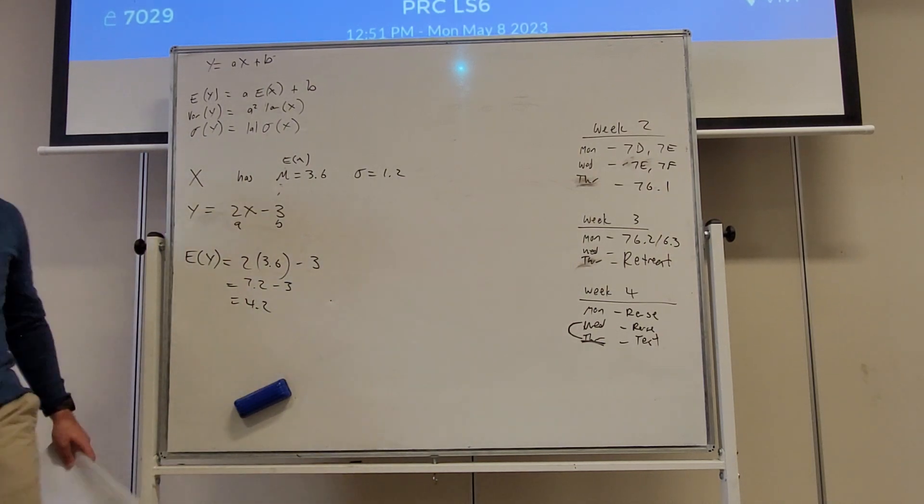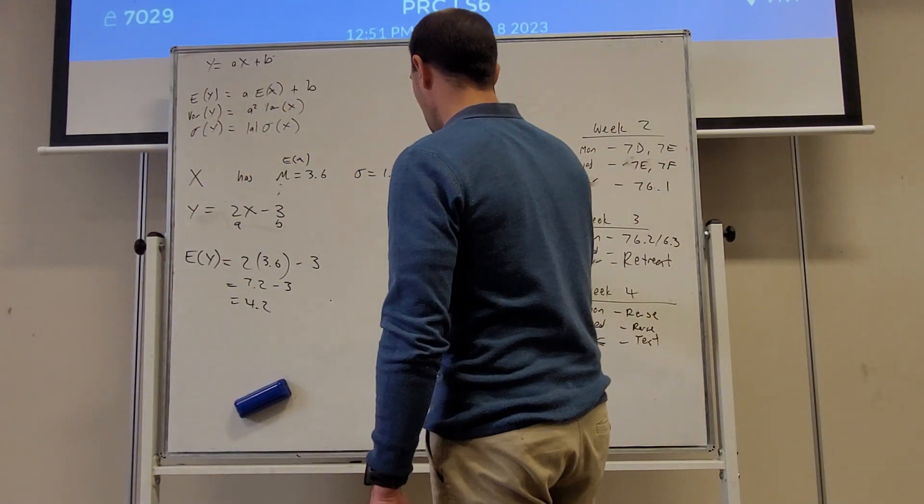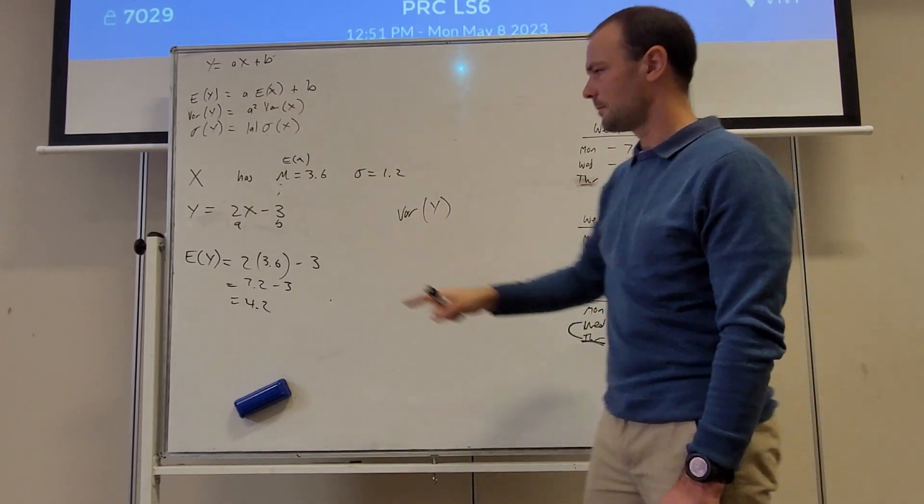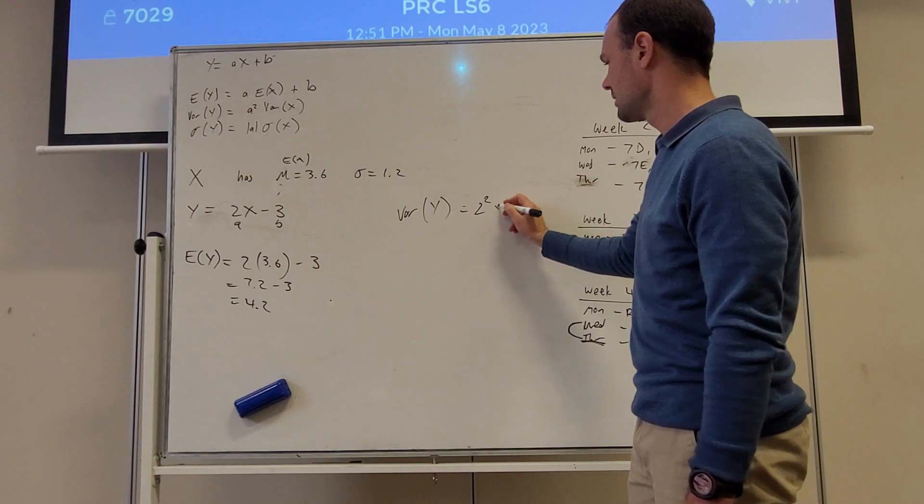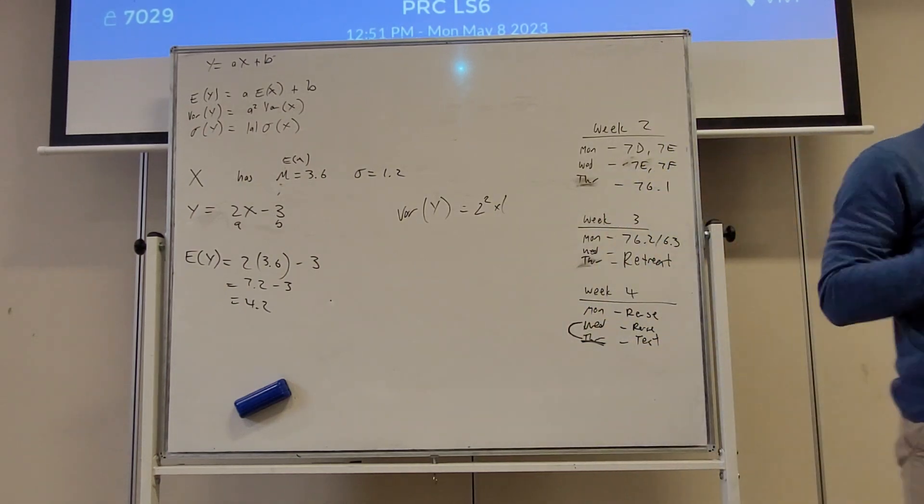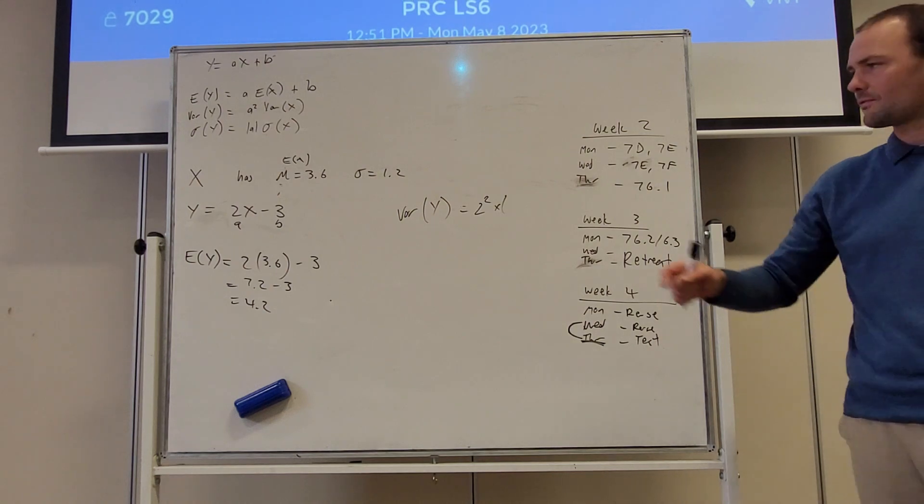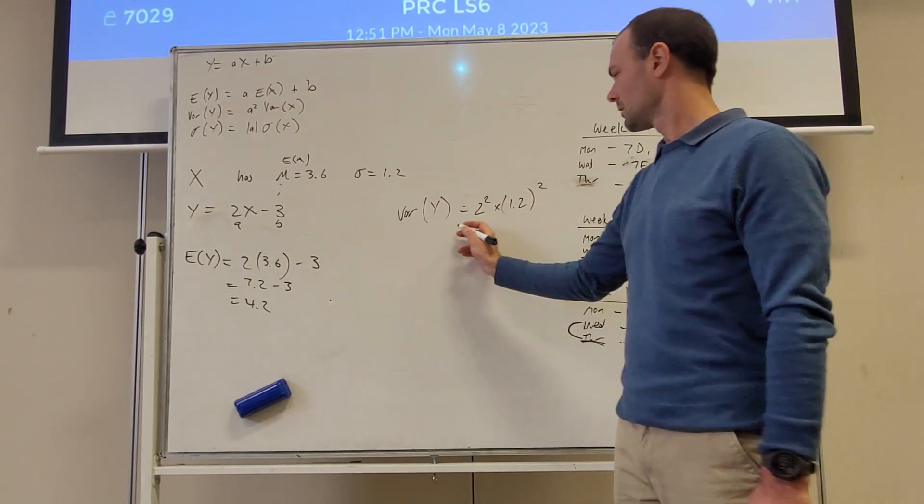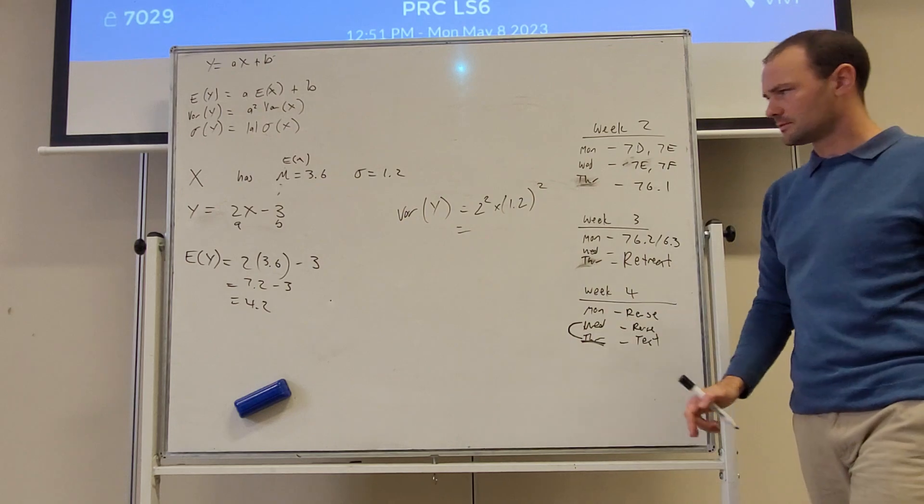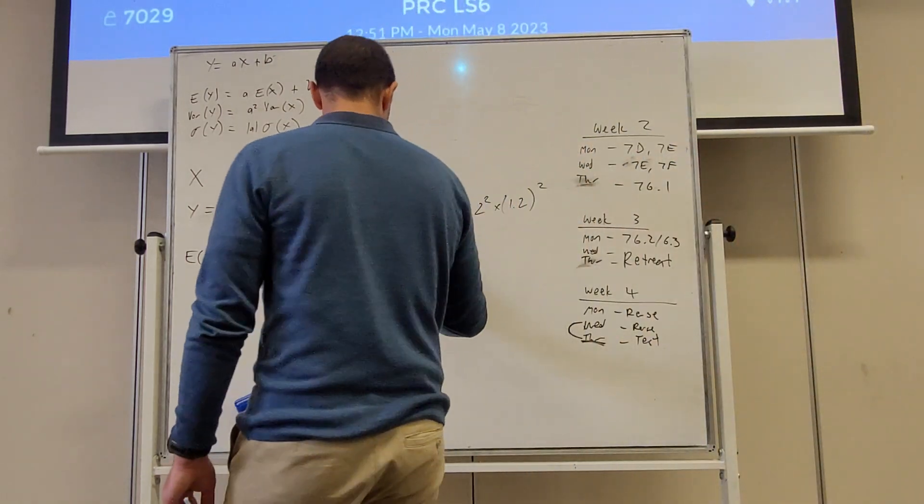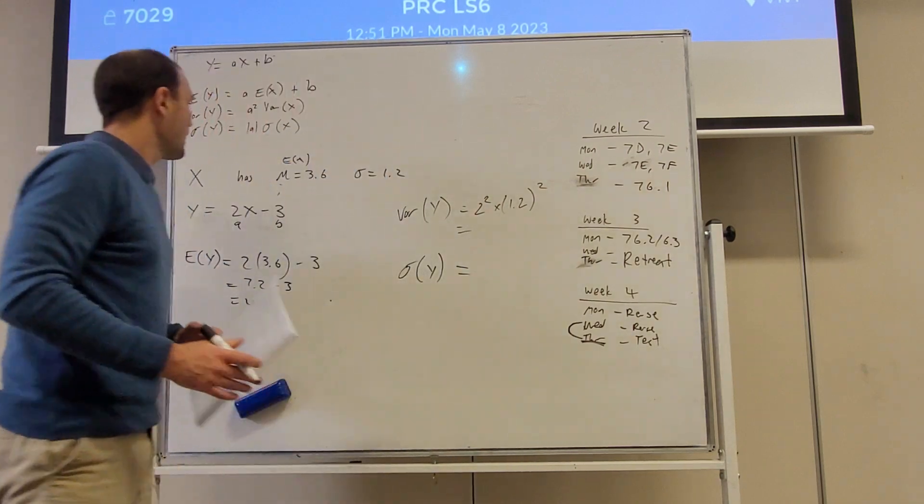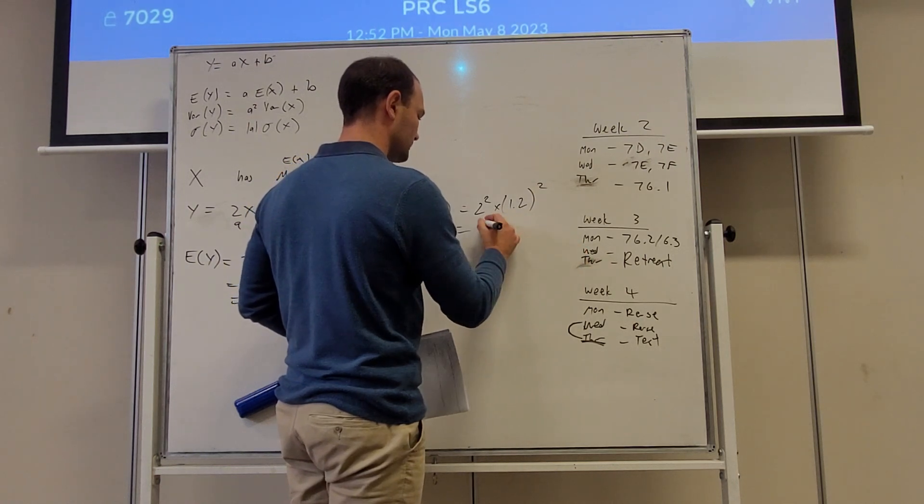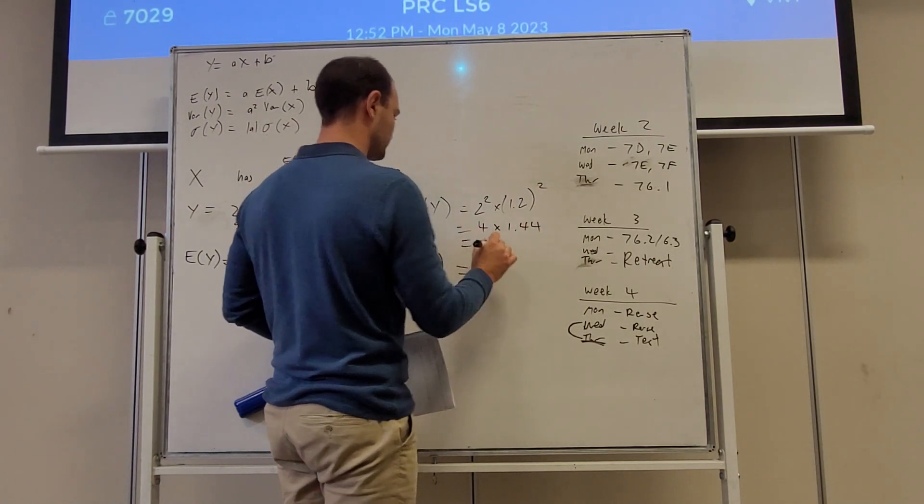Okay, move on to the variance. The variance of y is going to be a squared times the variance of x. So that's going to be 2 squared, in our circumstance, multiplied by the variance of x. Now we don't have the variance of x, but we do have the standard deviation of x. And the variance is equal to the standard deviation squared. So 1.2 squared is 1.44, and we have 4 times 1.44, which is 5.76.